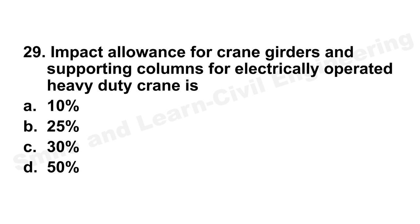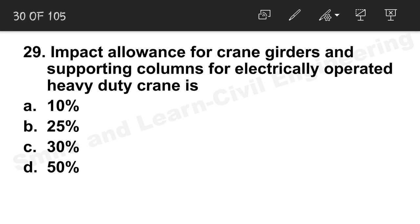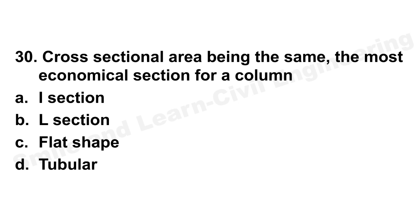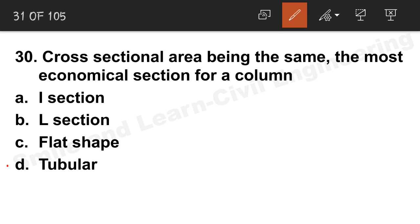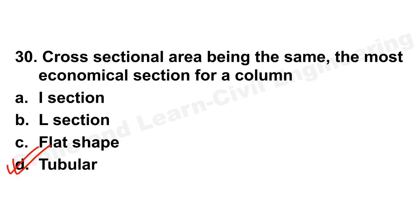Question 29: Impact allowance for crane girders and supporting columns for electrically operated heavy utility cranes. Similar to question 22, the correct answer here is also 10 percent. Question 30: With the same cross-sectional area, the most economical section for a column is a tubular section. Option D is the correct answer.